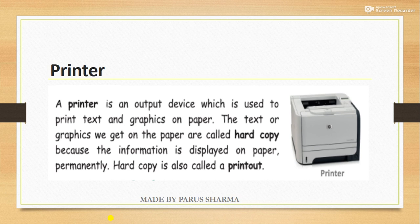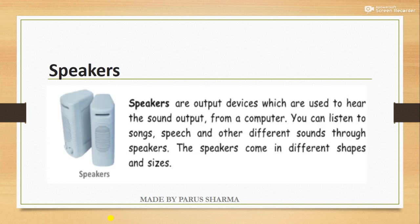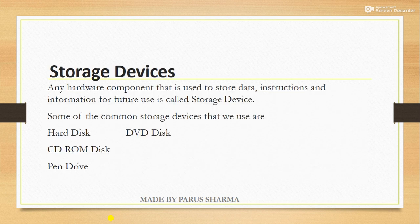The text or output you get on paper is called a hard copy or a printout. Speakers are output devices used to hear or listen to sound from a computer, and they come in different shapes and sizes. Storage devices are devices used to store data, instructions, and information for a long period so you can use them in the future. Some common storage devices are hard disk, DVD disk, CD-ROM disk, and pen drive.